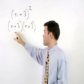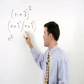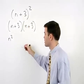So, the product of the first terms, n times n, is n squared, plus the product of the outer terms, n times positive 3, is positive 3n.